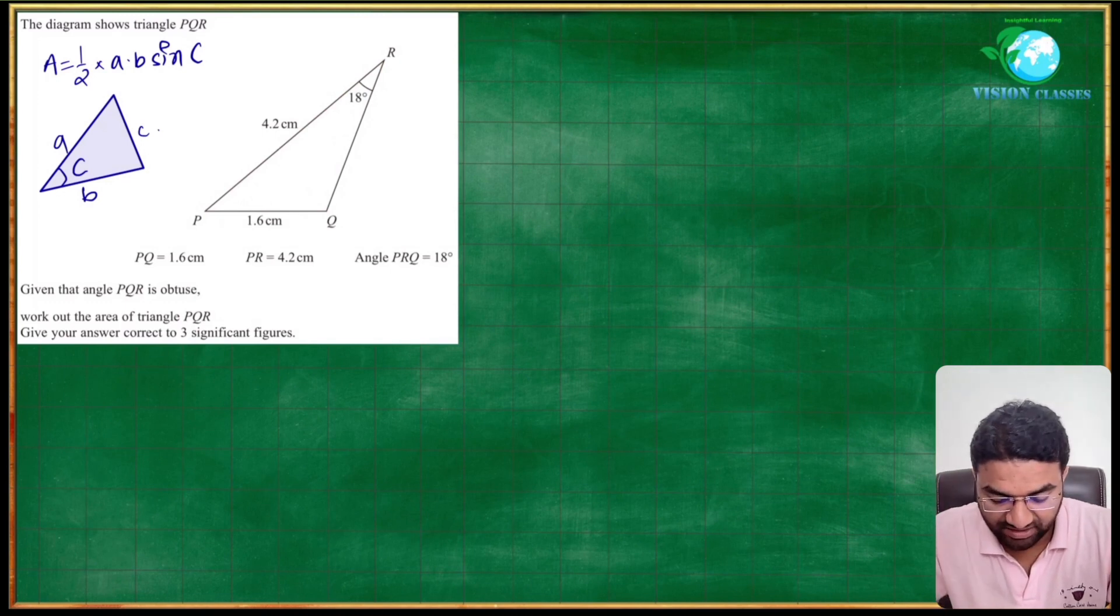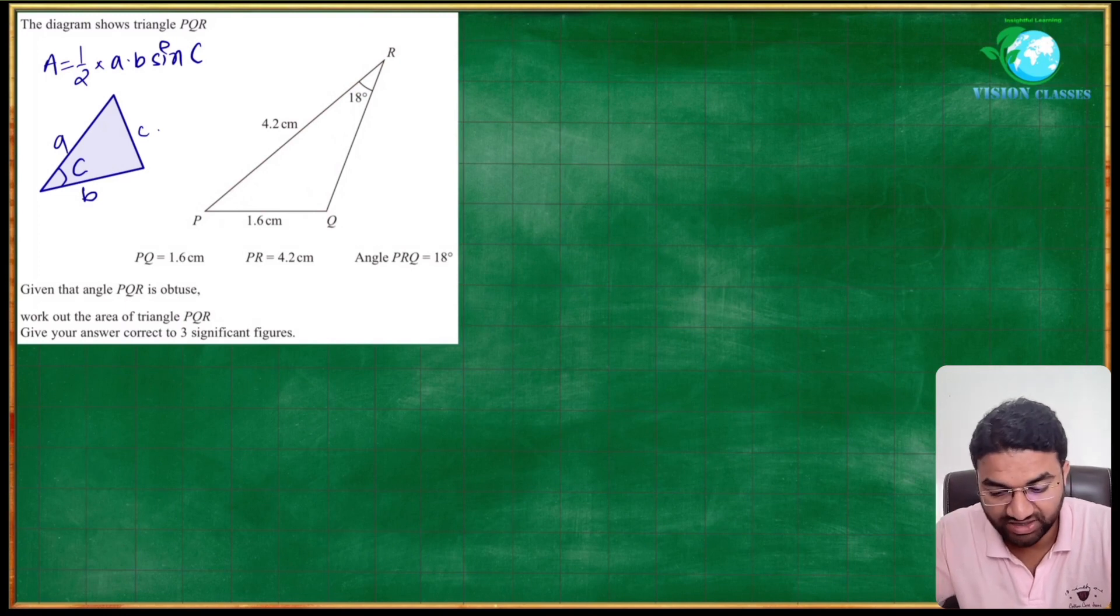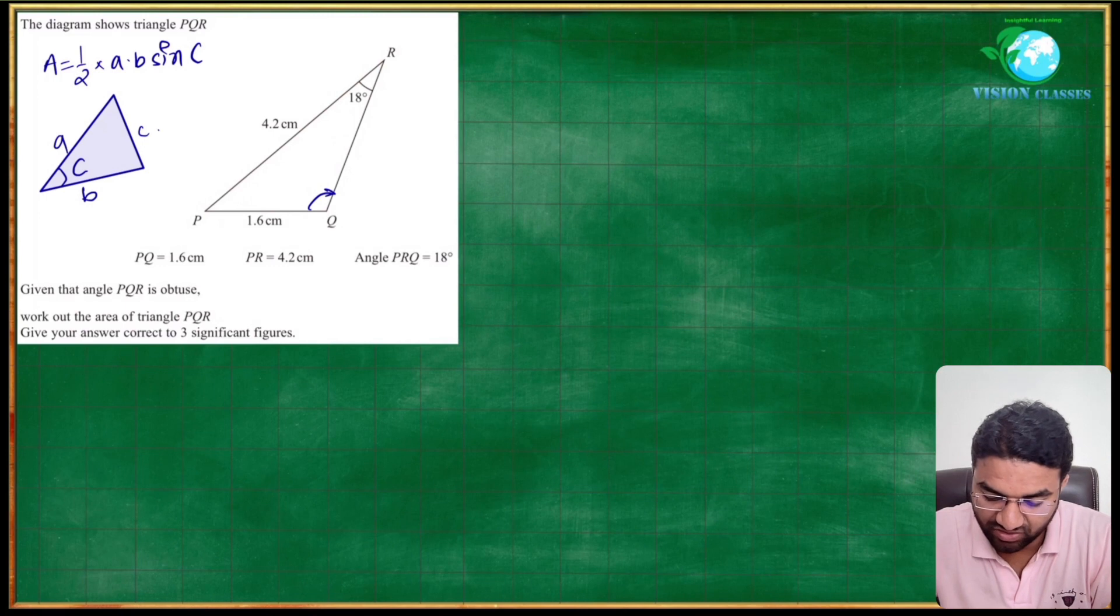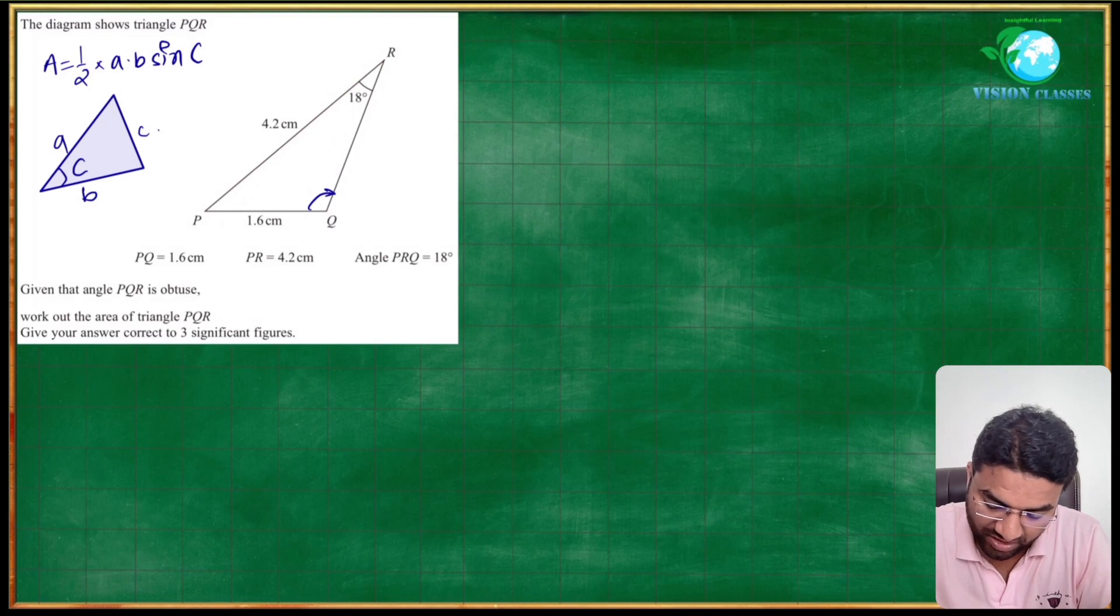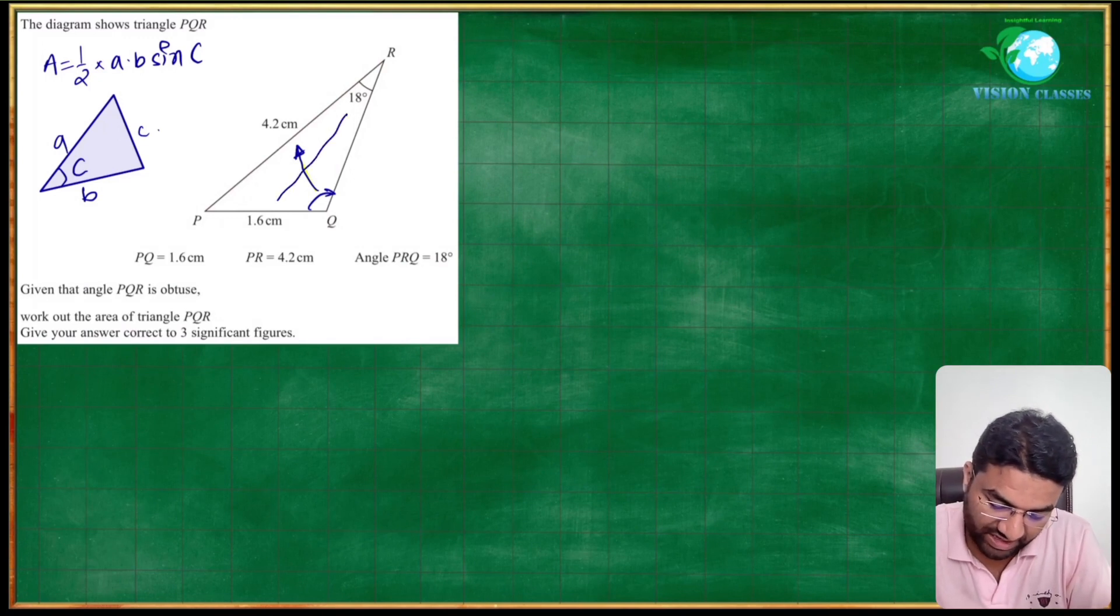In this question, angle PQR is an obtuse angle, so we have to find out firstly the obtuse angle using sine rule concept. Sine rule concept says that you need to have opposite sides. For Q we have opposite side that is 4.2, and for angle R, which is 18 degrees, we have opposite side 1.6.